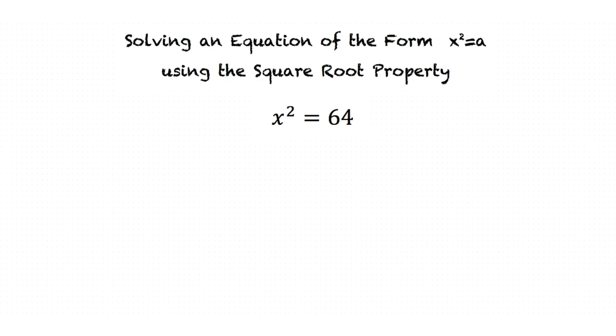x squared is equal to 64 is the same as x times x is equal to 64. So we wanted to find what number when multiplied by itself will equal 64. If we substitute our positive solution 8 we see that 8 times 8 is equal to 64 which is true.